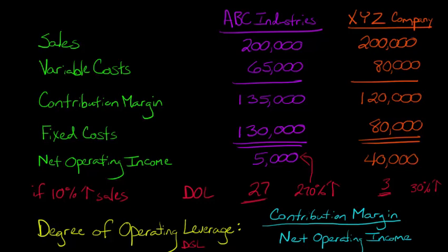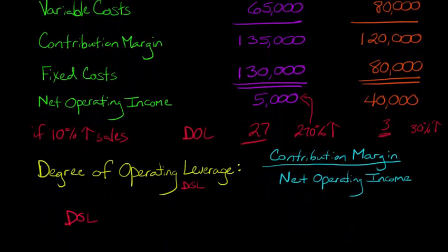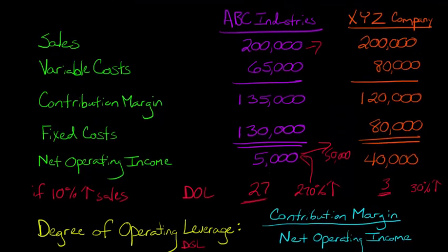The closer you are to the break-even point, the more impact an increase in sales is going to have on your profitability. As you get above that break-even point and profitability grows higher and higher, the DOL is not static — DOL is going to change. This is very important: DOL is not constant. As sales and profits continue to increase — say from $5,000 to $50,000 or $100,000 — the DOL is going to start decreasing because you're getting further and further away from the break-even point. And as you get further from break-even, each incremental increase in sales is going to have less and less of an impact on the bottom line.